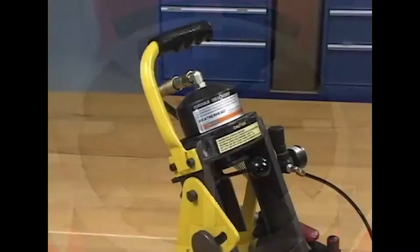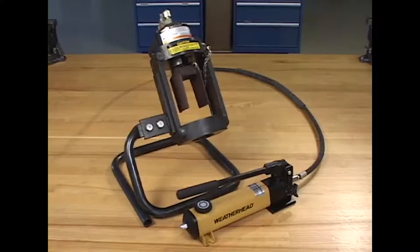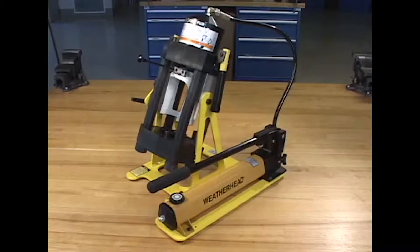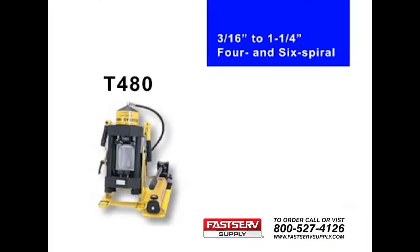The portable models, the T460, T462, and the T465 are identical except for the type of power source. All are engineered to crimp 3/16 inch fiber braid hose through 1 and 1 quarter inch 2 wire hose. The T480 incorporates the size features of the T420 ColoCrimp Super 1 in a portable unit, capable of crimping hoses from 3/16 inch to 1 and 1 quarter inch 4 and 6 spiral.